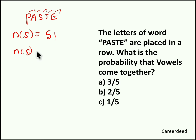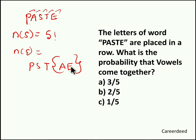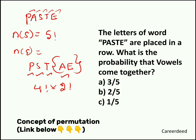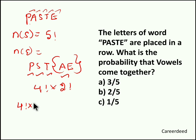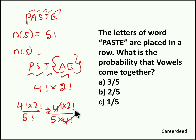Now what we need is vowels to come together. The letters are P, A, S, T, E — the vowels are A and E, and they should be considered as a single unit. So we have how many units to arrange: 1, 2, 3, 4 — giving 4 factorial arrangements. And A and E can be arranged among themselves in 2 factorial ways. So the number of favorable events is 4 factorial into 2 factorial. Therefore the probability is 4 factorial into 2 factorial divided by 5 factorial. Since 5 factorial equals 5 into 4 factorial, the 4 factorials cancel, giving 2 by 5. So 2 by 5 is the probability that vowels come together in the word PASTE.